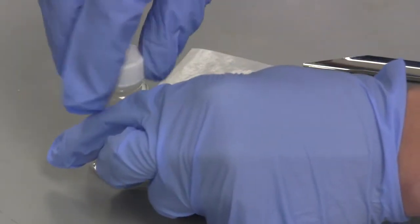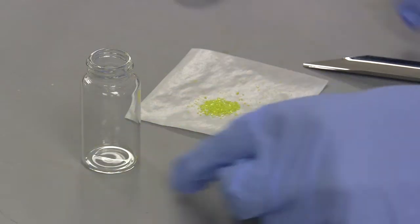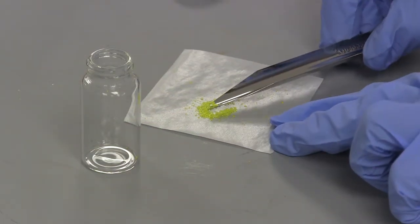Prepare the sample by placing a very small amount of product into the scintillation vial. Solid samples should be smaller than a pinhead.